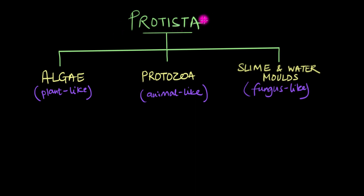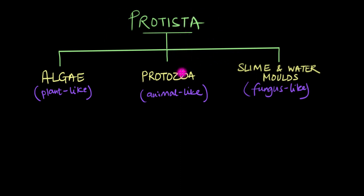The diversity amongst protists has been driving scientists crazy for a very long time. However, even though there are better, more advanced ways to classify them now, generally all protists have been broadly divided into three categories: the plant-like protists, the animal-like protists, and the fungus-like protists.